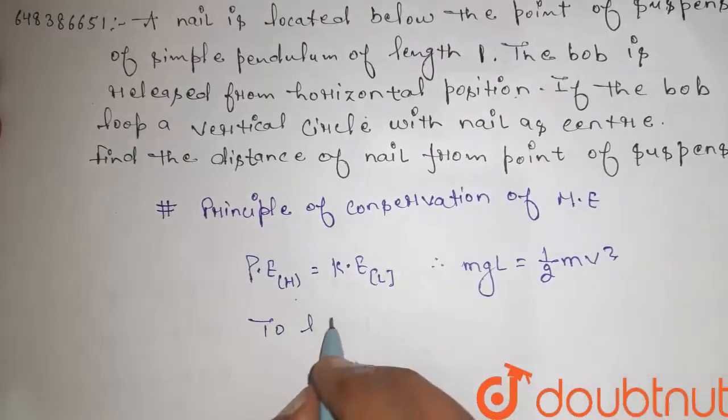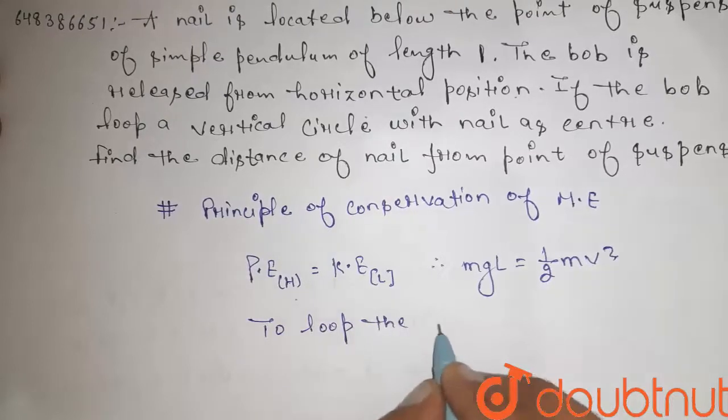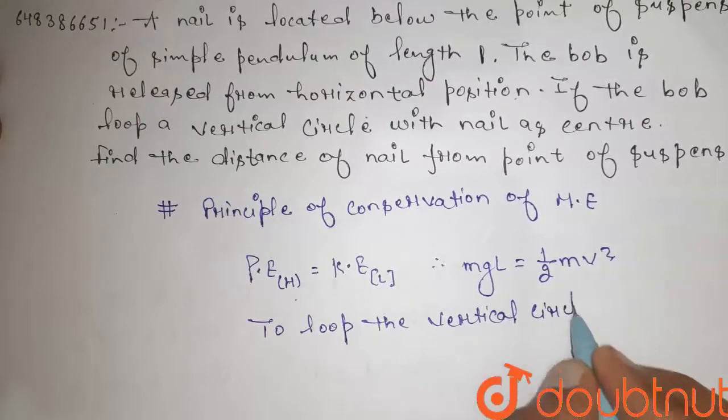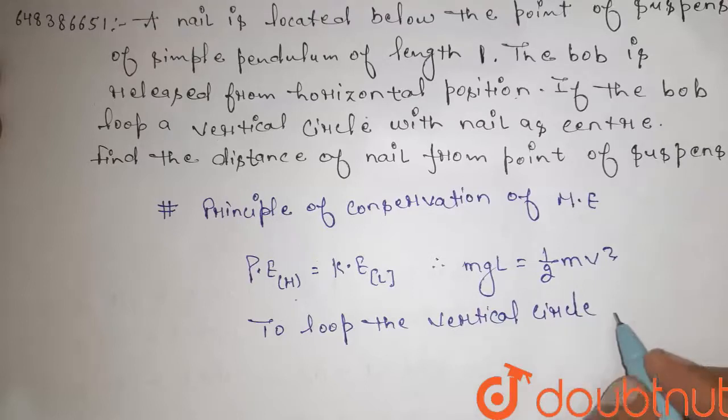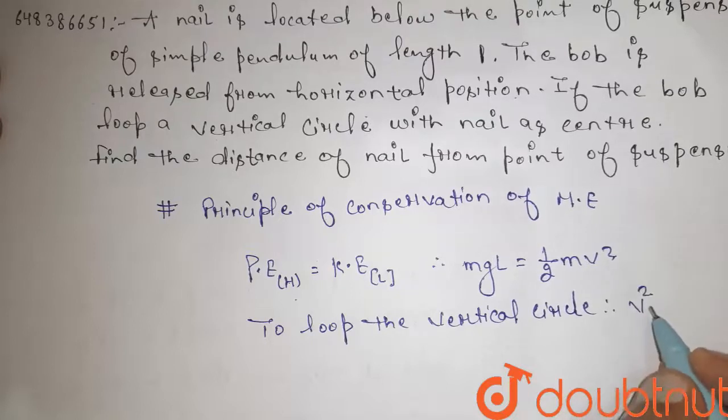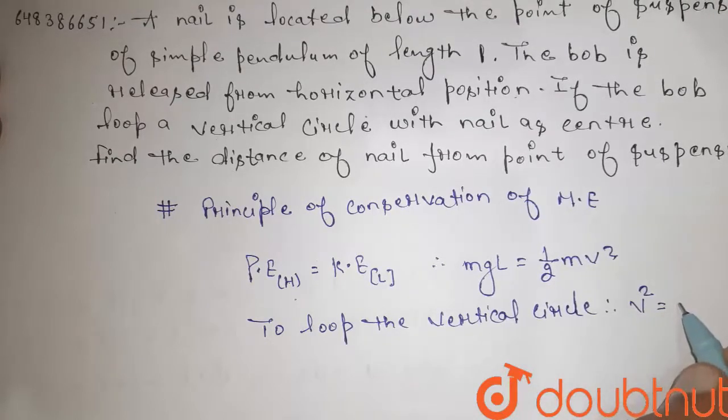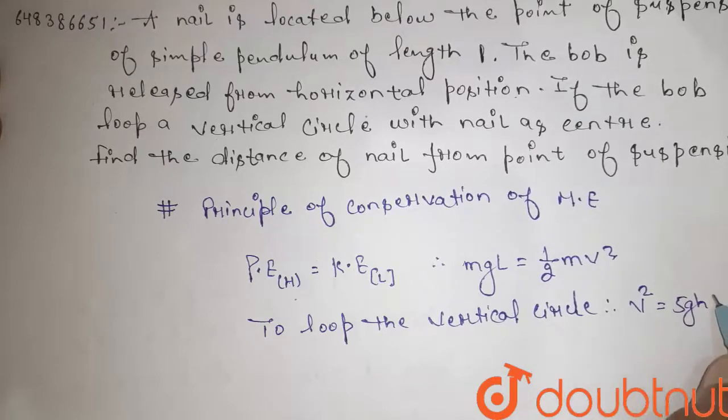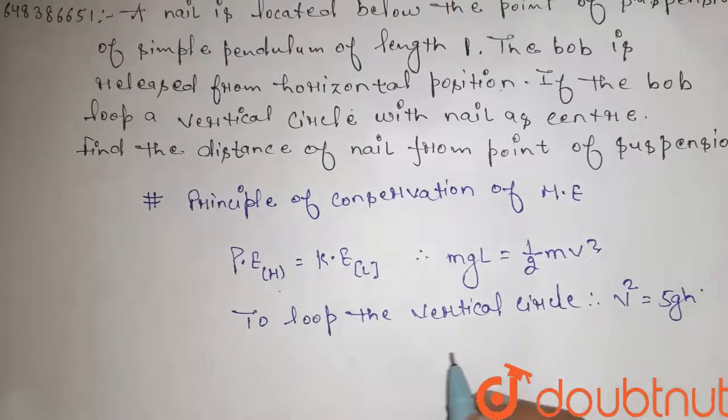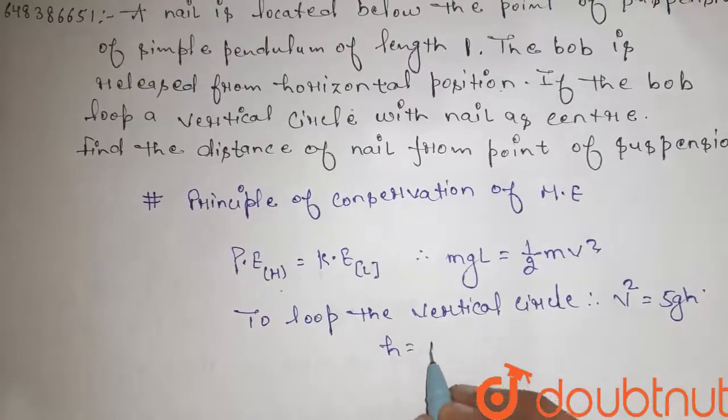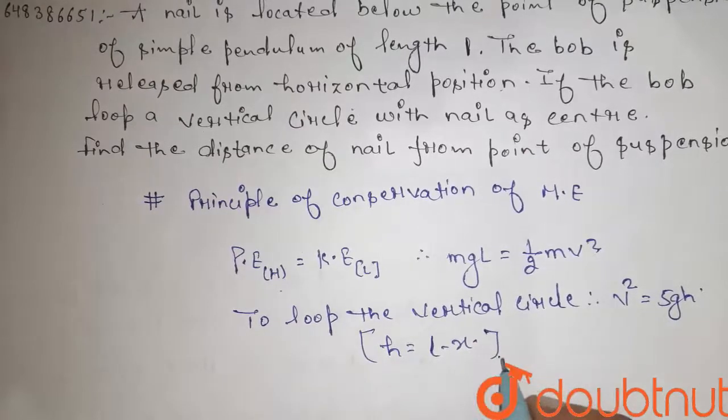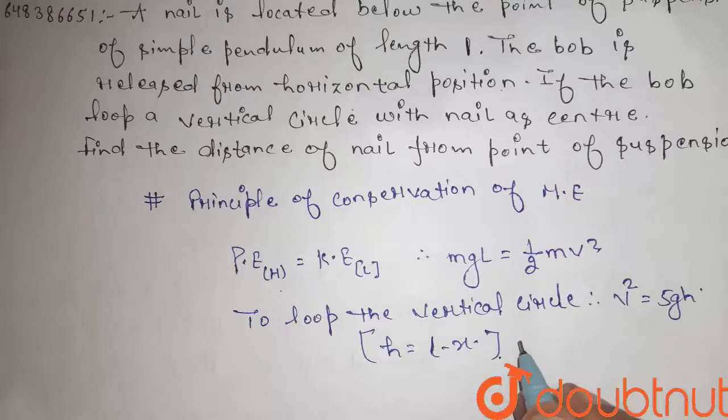To loop the vertical circle, the velocity at the top point is V squared equals 5gH. Where X is the distance of the nail from the point of suspension.